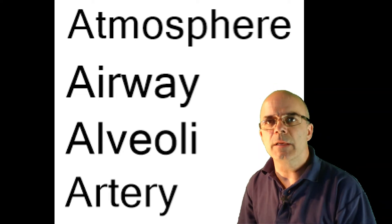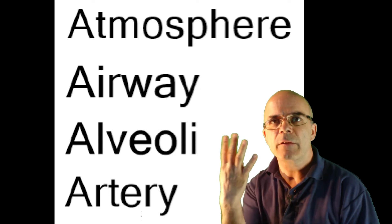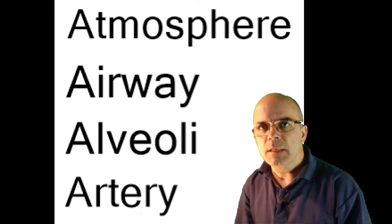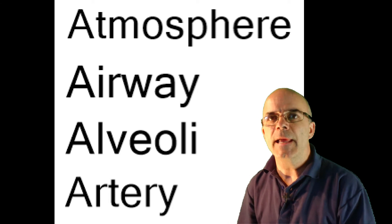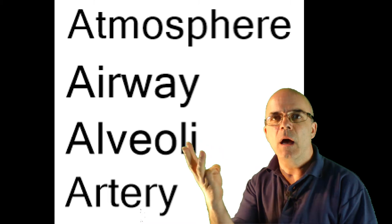In order to understand the AA gradient, we need to first understand what affects the pressure of oxygen at four points. So let's break it down into the four A's: atmosphere, airway, alveoli, and artery.